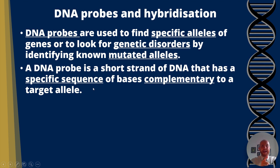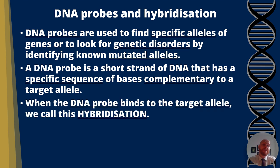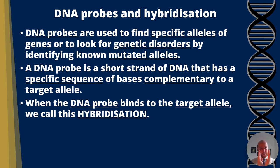So the probe may have bases A, A, T, whereas the target allele has T, T, A — they are complementary. When the DNA probe binds to the target allele, we call this hybridisation, because a hybrid is when two different things come together. So we have the probe and we have the target DNA, and they come together and hybridise — two different things coming together.